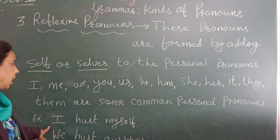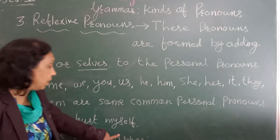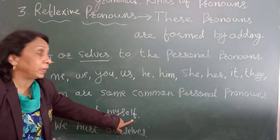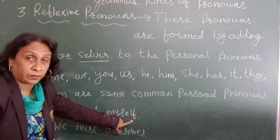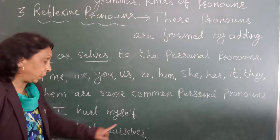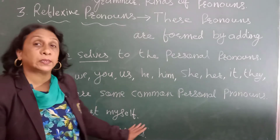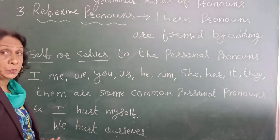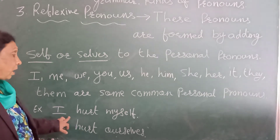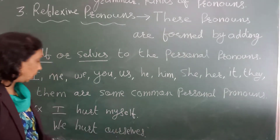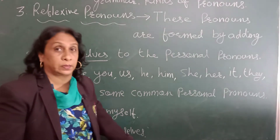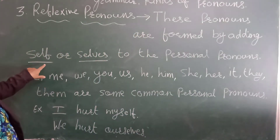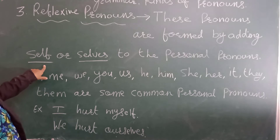For example: 'I hurt myself' — 'my' is a personal pronoun and we add 'self' to make it reflexive. This is a singular sentence. 'We hurt ourselves' — this is a plural sentence. So remember: 'I hurt myself' is singular, 'We hurt ourselves' is plural. Reflexive pronouns are formed by using 'self' or 'selves'.